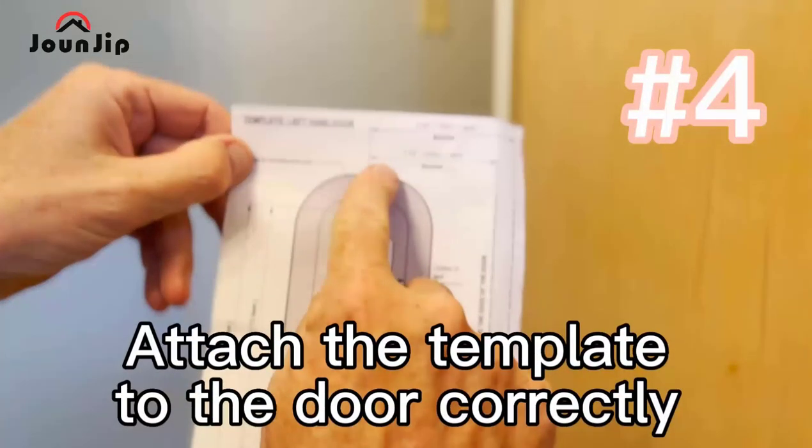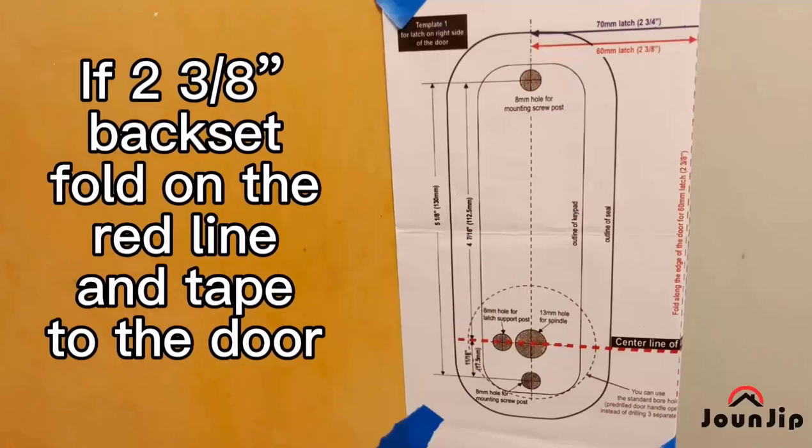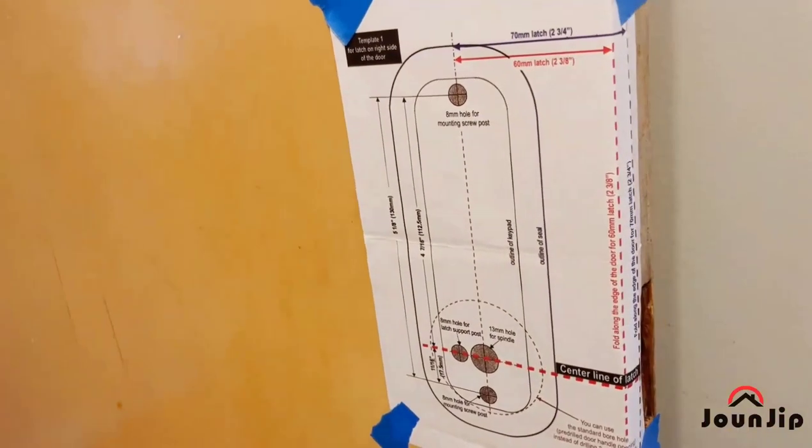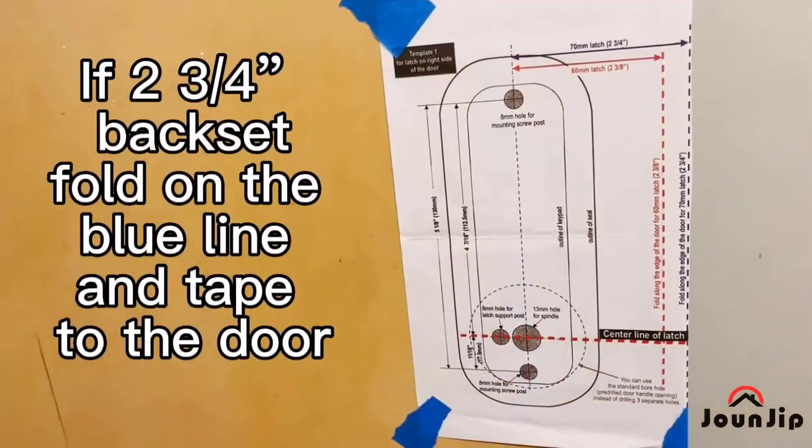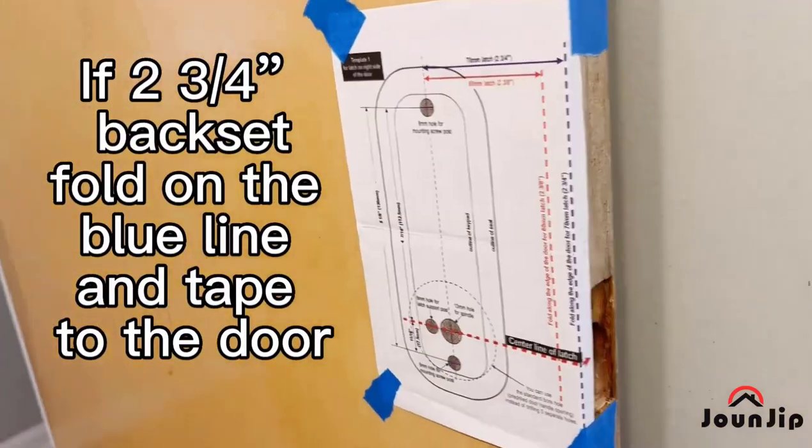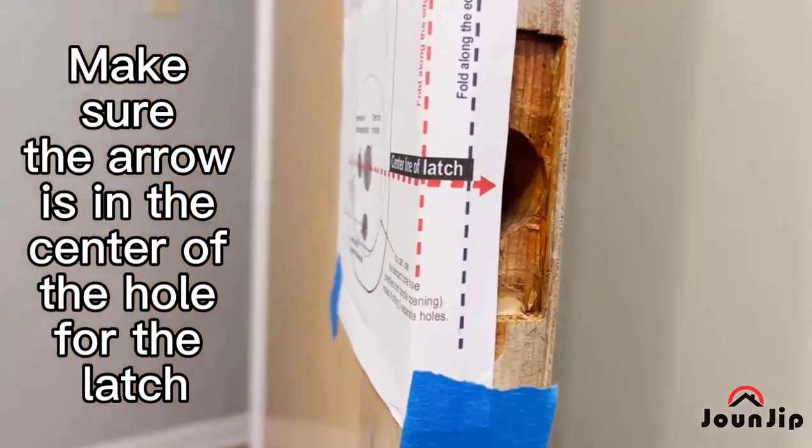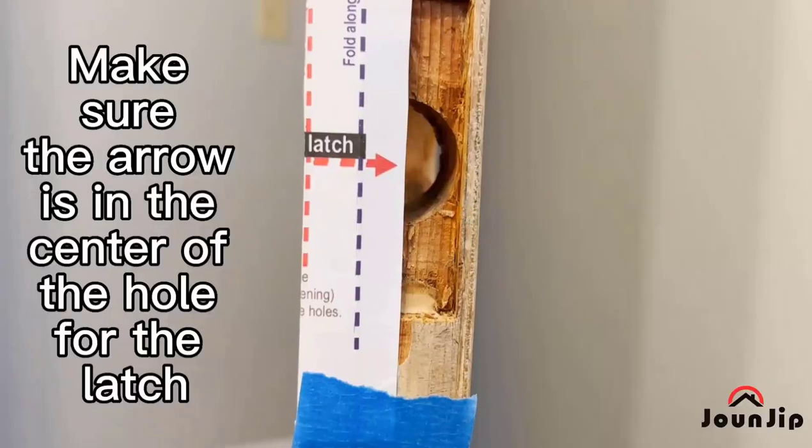Number four: attach the template to the door correctly. If you have a two and three eighths inch backset, fold on the red line and tape it to the door. If you have a two and three quarters inch backset, fold on the blue line and tape it to the door. Make sure the arrow is in the center of the hole for the latch.